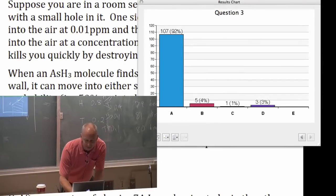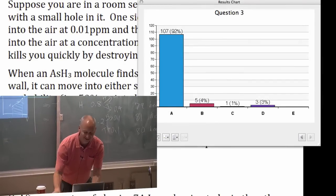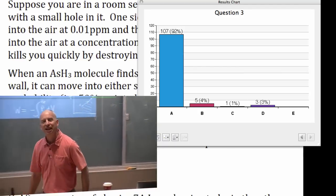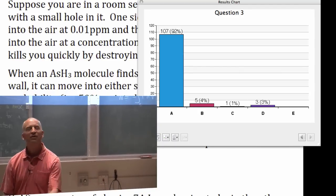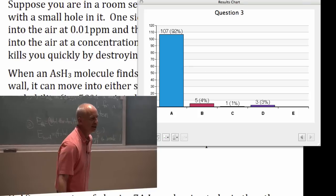All right, of course it's a problem. If 100 parts per million kills you quickly, then 50 parts per million, okay, not as quickly, but it's not good.